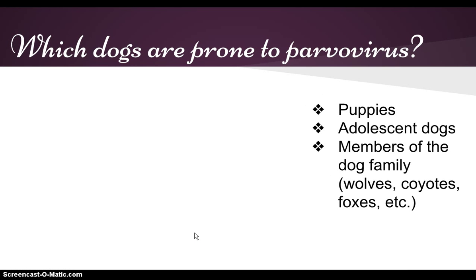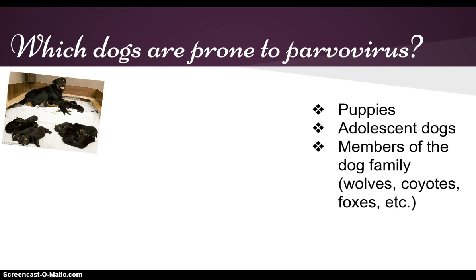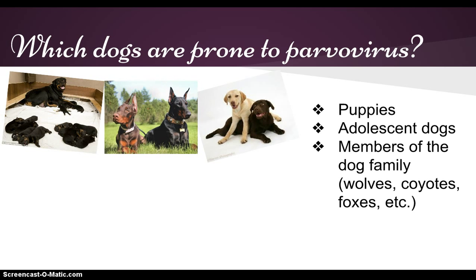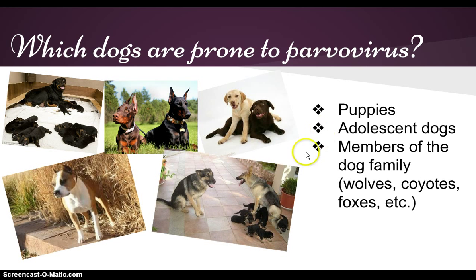Which dogs are prone to parvovirus? Puppies, adolescents, and dogs that are not vaccinated are the most susceptible to the virus. It also affects members of the dog family, for example wolves, coyotes, and foxes. Among dog breeds, those particularly susceptible include Rottweilers, Labrador Retrievers, Doberman Pinschers, American Staffordshire Terriers, and German Shepherds.